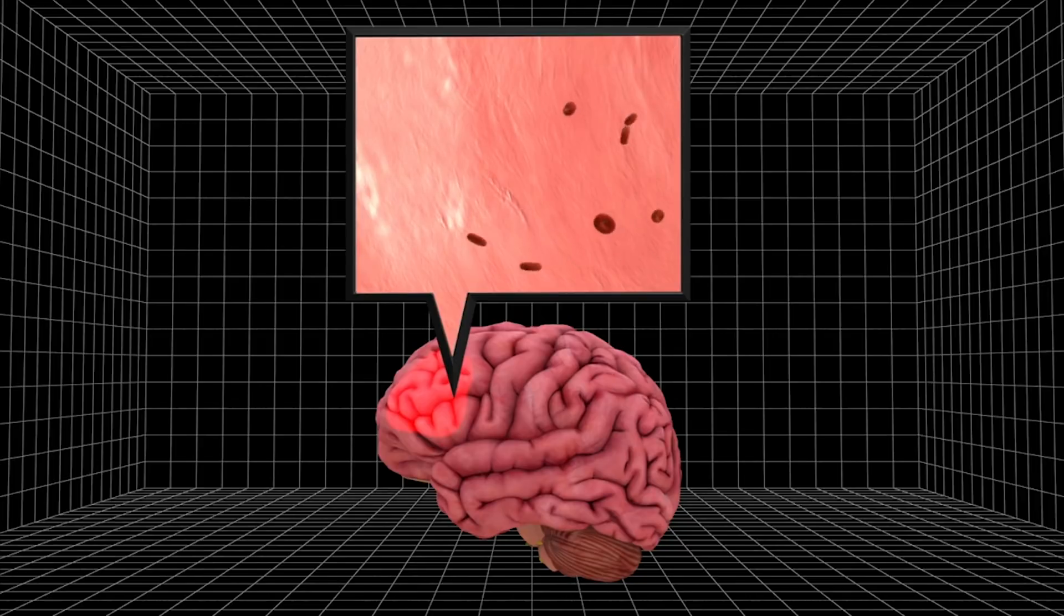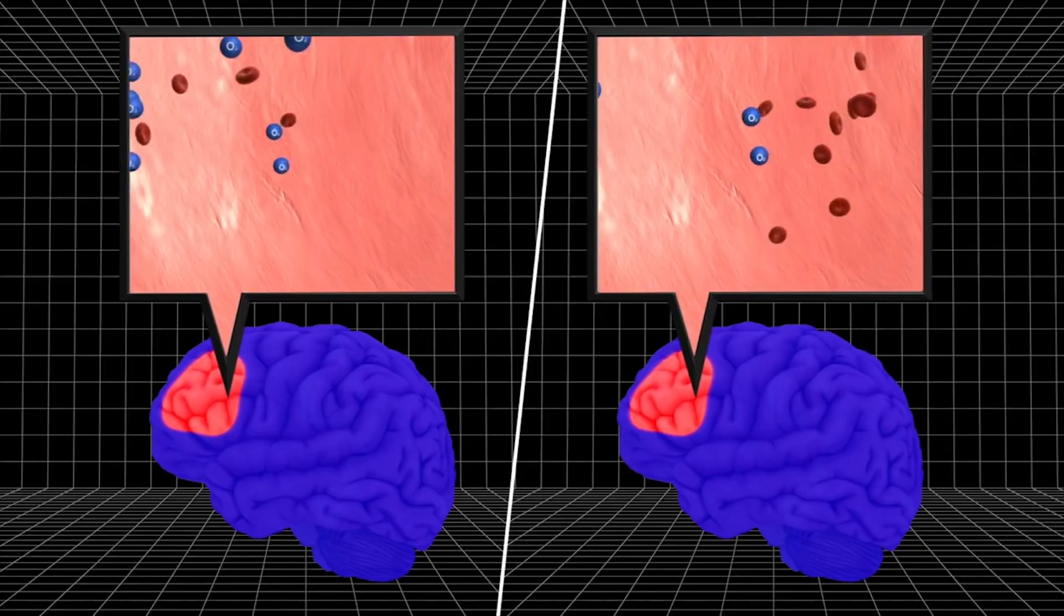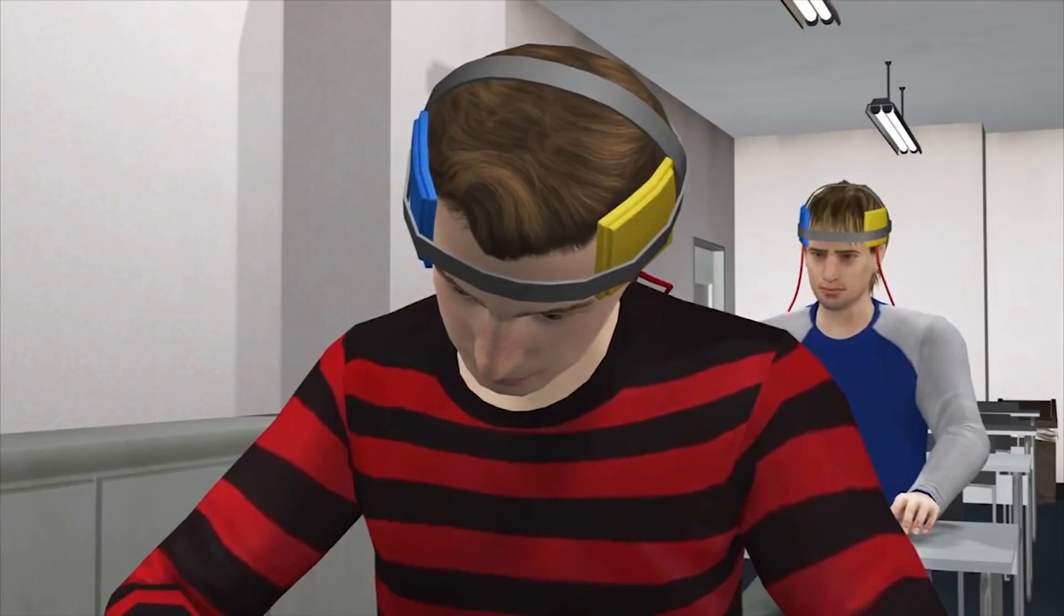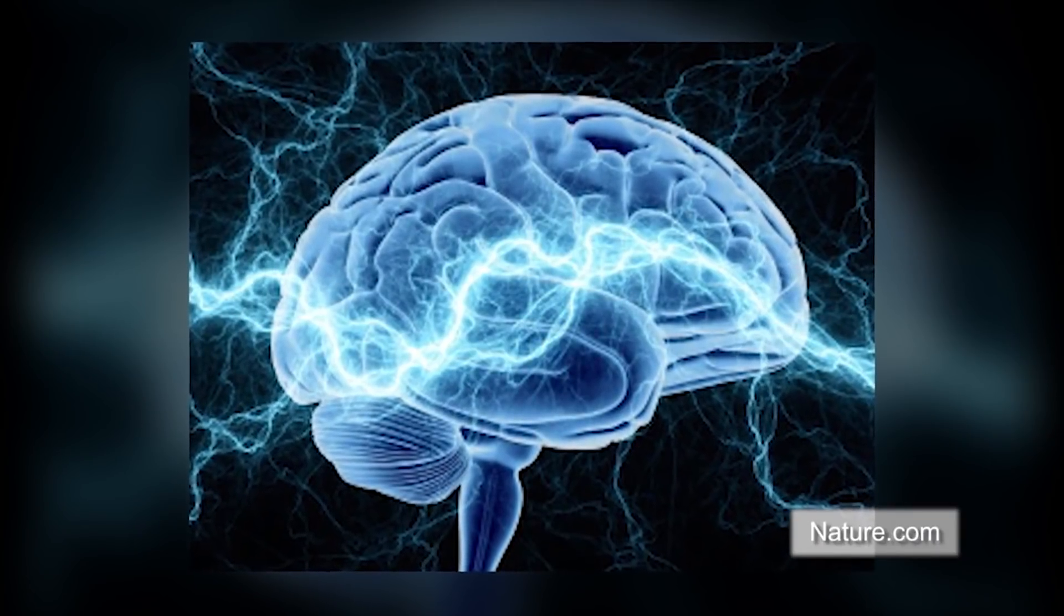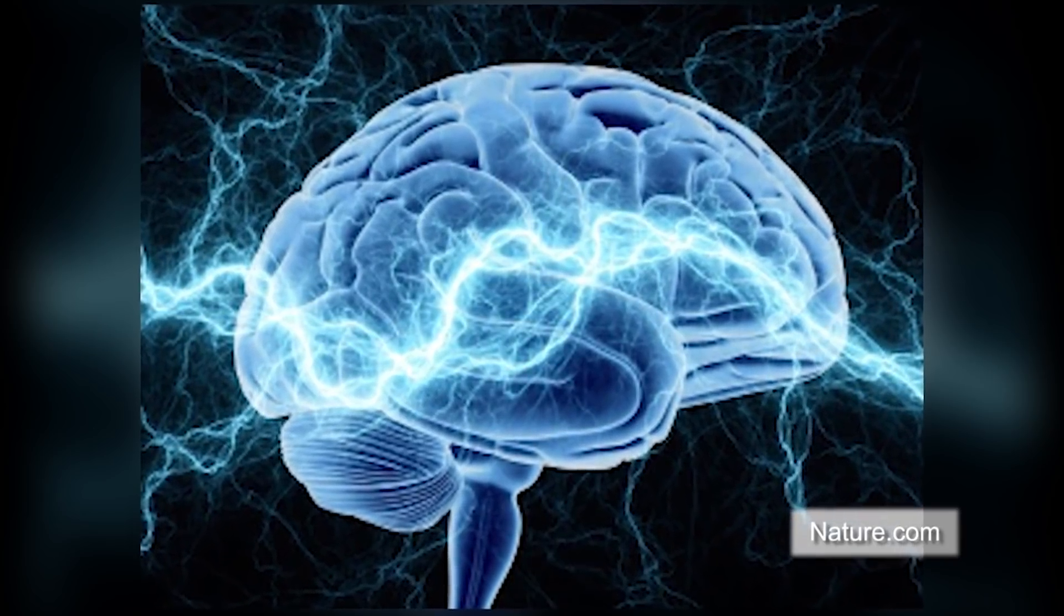The currents caused less blood flow to the brain, but no change in oxygen consumption, meaning the stimulated brains were actually working more efficiently. The stimulated group ended up doing faster math calculations than the control group. So far, researchers have found no adverse effects from applying such electrical stimulation to the brain.